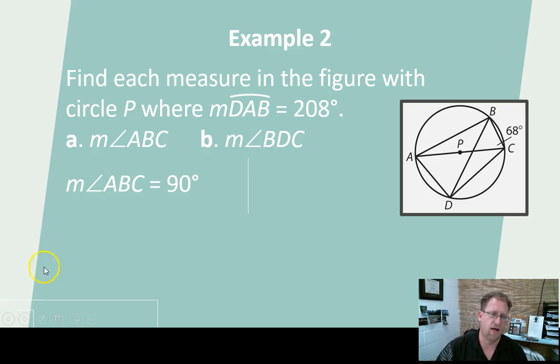Let's do a couple examples here before we're done. So find each measure in the figure with circle P, where arc DAB equals 208 degrees. The first thing we want to find out is angle ABC. Well, angle ABC is inscribed in a half circle, a semicircle. This is 180 degrees, because AC is a diameter. So this is 180 degrees. So that means that the angle that inscribes it is 90 degrees. So that's got to be a 90 degree angle right there.